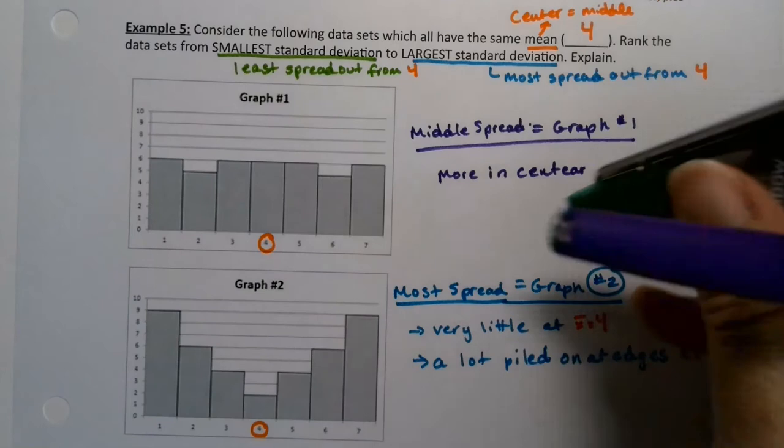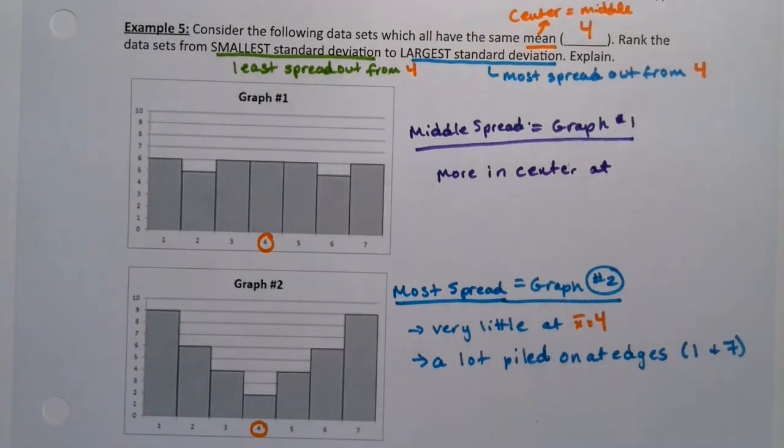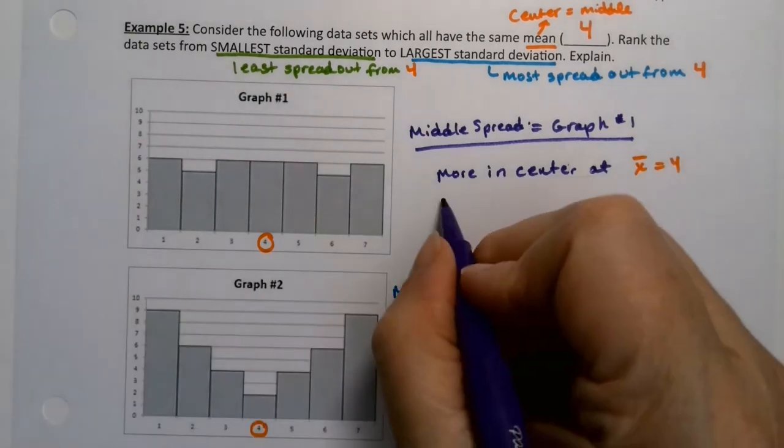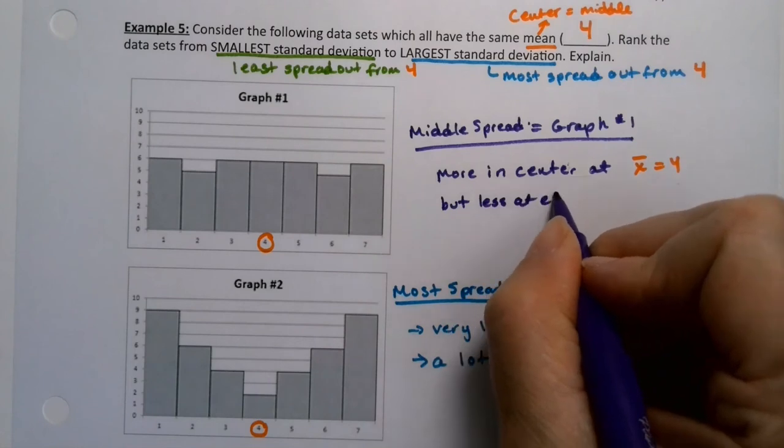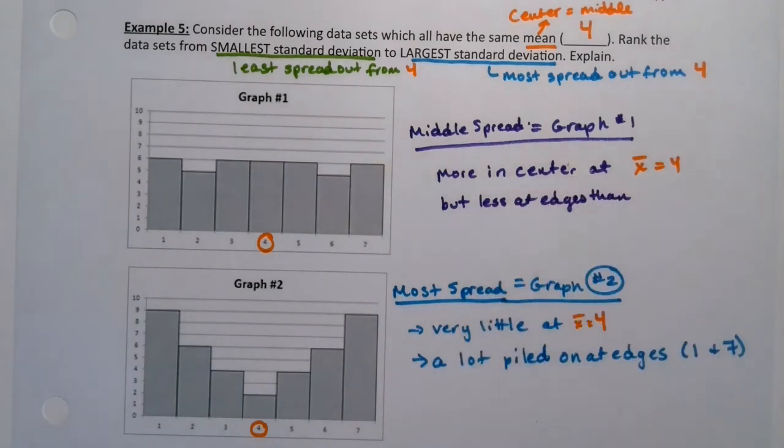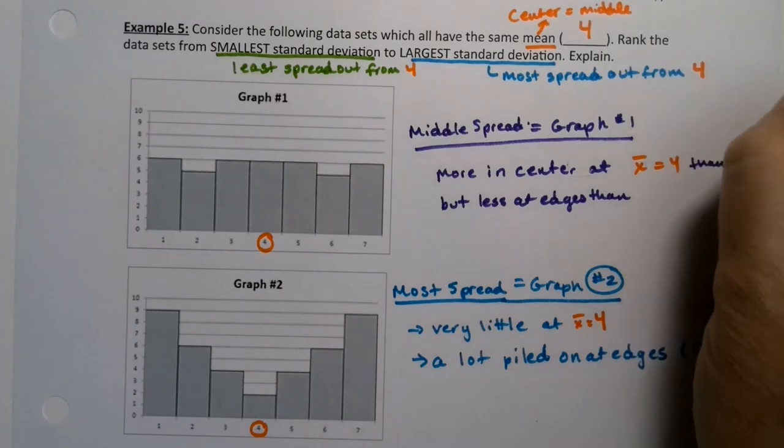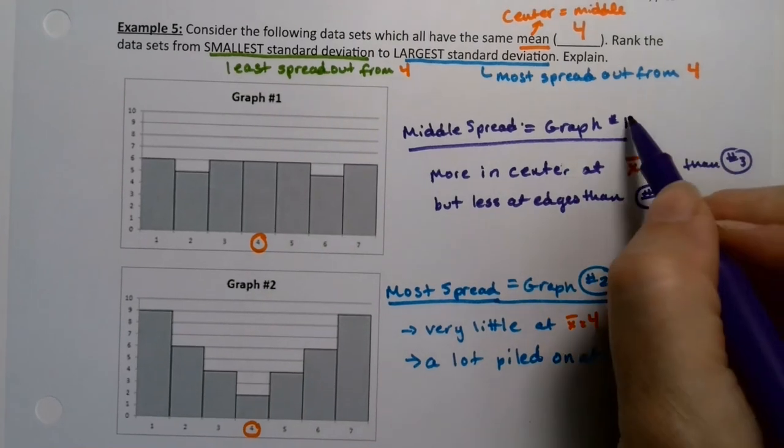More in the center. At X equals four, X bar equals four, but less at the edges. Which is what makes that graph the middle graph.